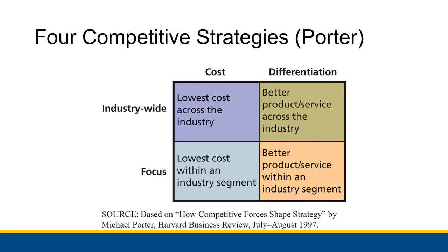A differentiation and focused strategy might focus on doing one product really, really well. For example, Gray Poupon would be a brand that focuses on differentiation and focus. They say they're different because they are higher quality and affluent customers really prefer them — enough to be passing their mustard between limousine windows at a red light, as in that particular commercial. They're focusing on a specific industry segment: mustards, rather than all condiments or all foods.